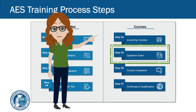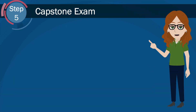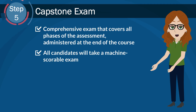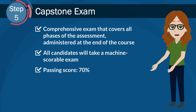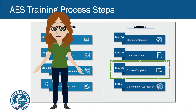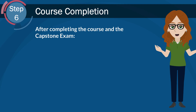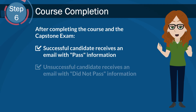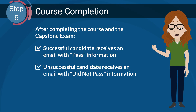Step 5 is the capstone exam. After you complete your AES course, you're now ready for the capstone or final exam. The AES capstone exam is a multiple-choice, machine-scoreable test that covers all aspects of a specific assessment. After you complete the AES capstone exam, you will receive an email with good news — you passed — or not so good news — you did not pass. When you complete the course and pass, you receive a certificate of qualification.